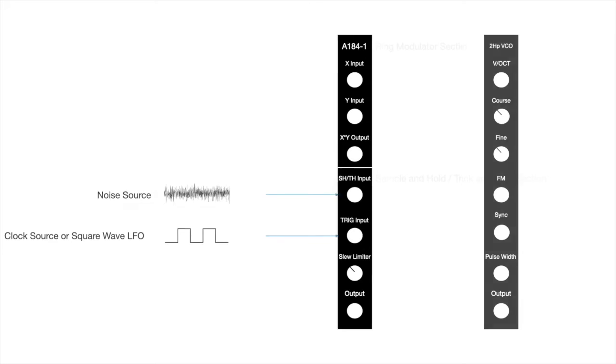For this demonstration we're going to be using the DOFR A1841 ring modulator sample and hold module, which is a ring modulator and sample and hold module combined into one. But for this demonstration we are merely focusing in on the sample and hold component of the module.